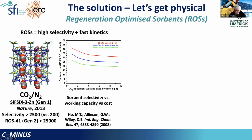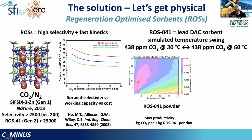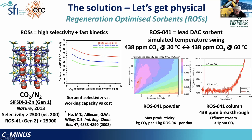When you combine these parameters, it's possible to benchmark materials. We have something called a heat map which allows us to look at the optimal regeneration conditions. ROS41 has a productivity of about one kilogram of CO2 per one kilogram of ROS41 per day. Using dynamic column breakthrough experiments, ROS41 is indeed capable of capturing CO2 from air — it reduces the CO2 concentration from 438 ppm down to less than 1 ppm.